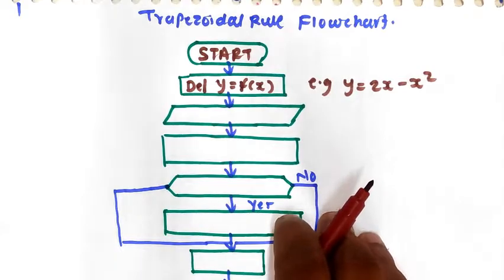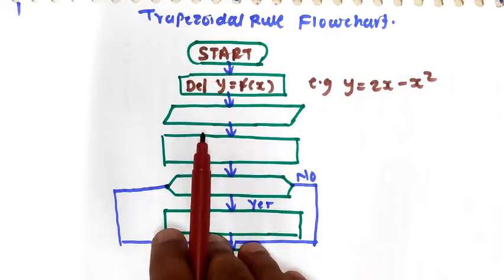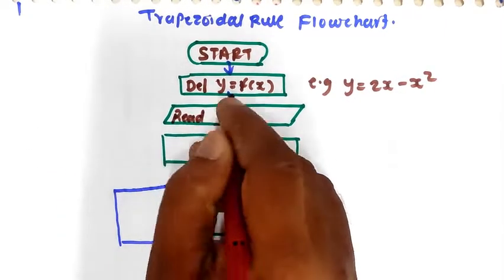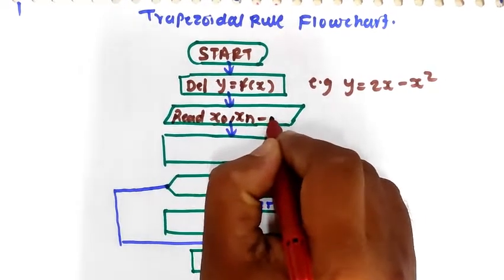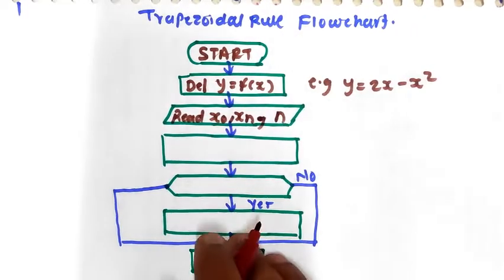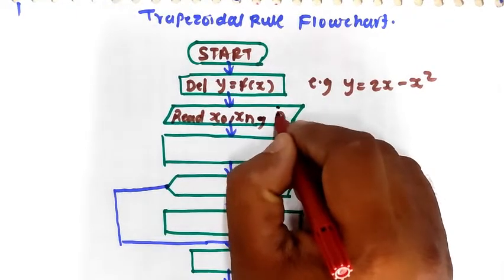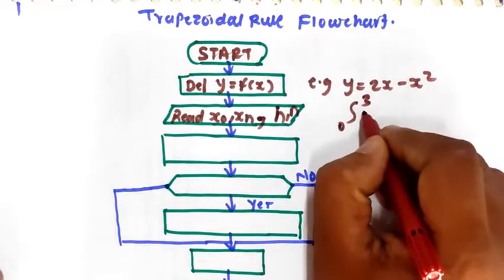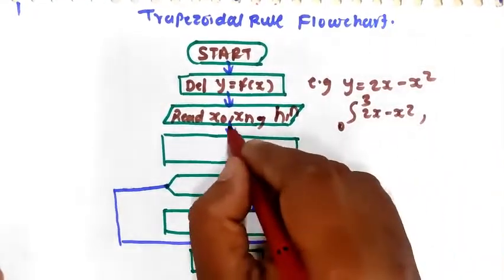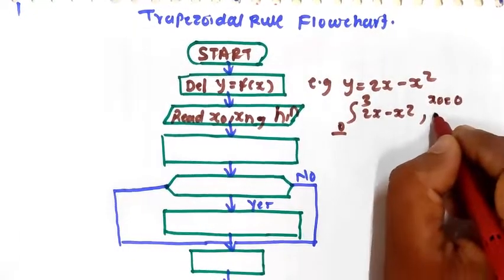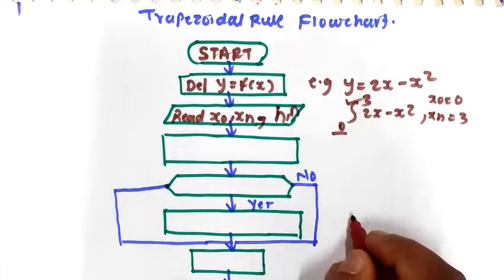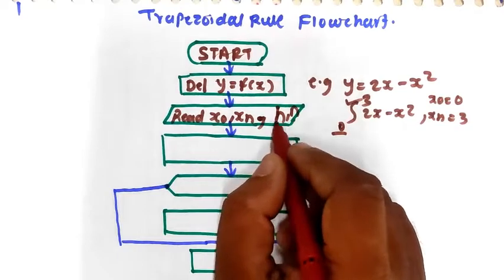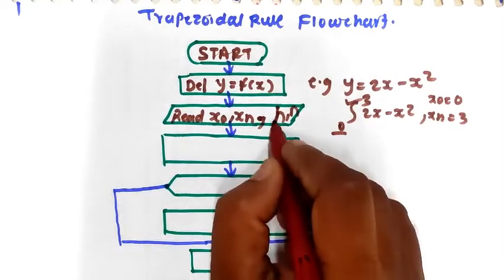Next, we have to enter the value of the lower limit x0, the upper limit xn, and the number of steps. So read x0, xn, and n — or we can say step size h — and number of iterations n, whatever is given. In this equation, the form would be 0 to 3 for 2x minus x square. So here 0 is x0, xn is equal to 3. The number of steps or iterations is given — mostly n is given.